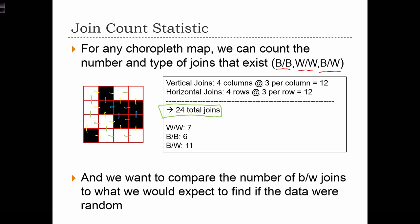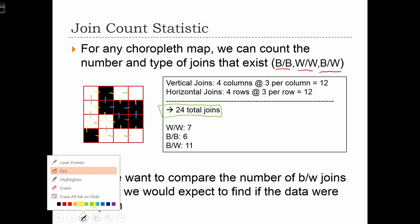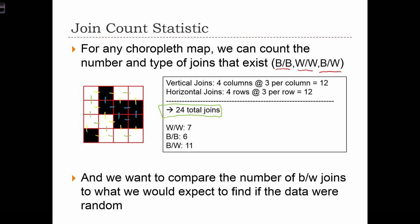Because we see that the number of joins, and I'll just use a capital J for that, equals the number of joins that are white with white, plus the number of joins that are black with black, plus the number of joins that are black with white.